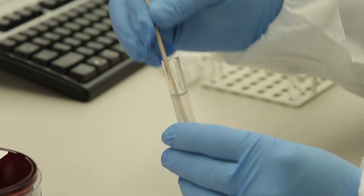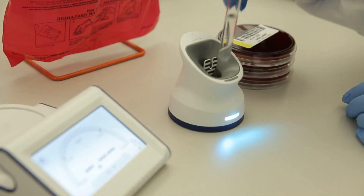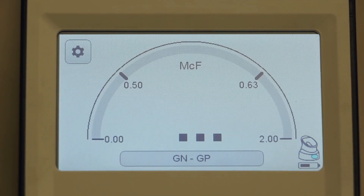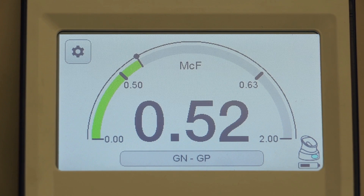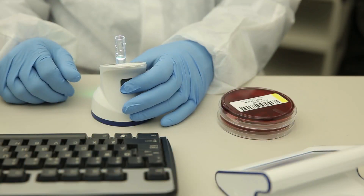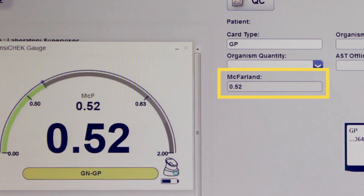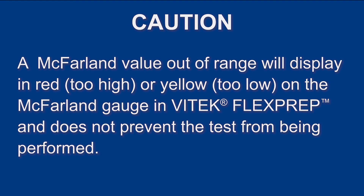If necessary, adjust the suspension and repeat the measuring process until the McFarland meter gauge is green and the value is within the appropriate range. Press the button on the back of the pod to accept the McFarland value and send it to Vitek FlexPrep. A McFarland value out of range will display in red (too high) or yellow (too low) on the McFarland gauge in Vitek FlexPrep, but does not prevent the test from being performed.